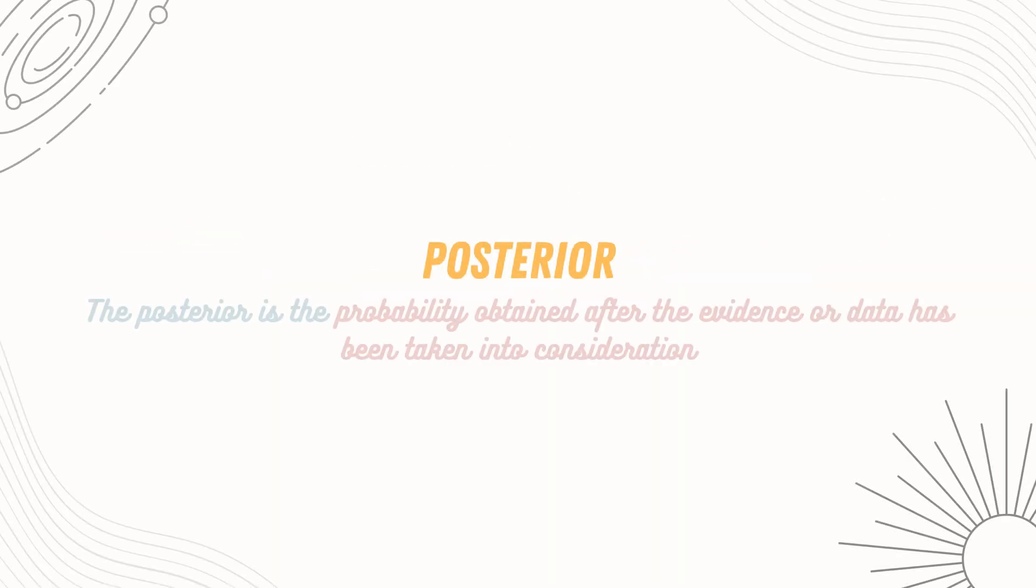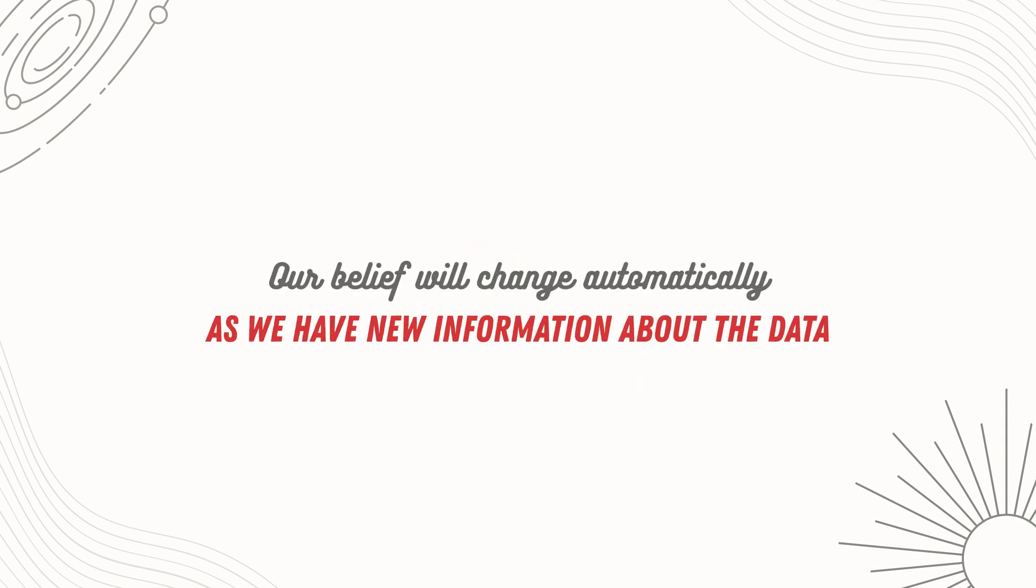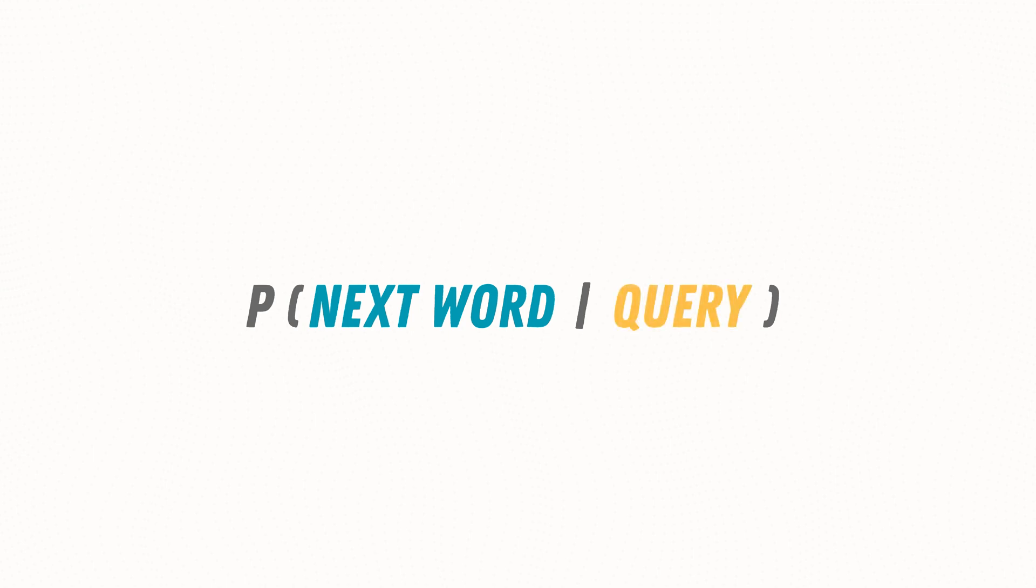The posterior is the probability obtained after the evidence or data has been taken into consideration, and prior is the probability before evidence is taken into consideration, which means our belief will change automatically as we have new information about the data. The intuition behind modern LLMs can be inferred from this like, predict the next word given a query. The Bayes' theorem is a really fundamental and powerful idea in itself.